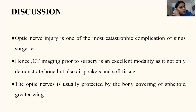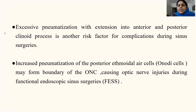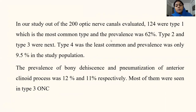Optic nerve injury is one of the most catastrophic complications of sinus surgeries. Hence CT imaging prior to surgery is an excellent modality, as it demonstrates not only the bone but also the air pockets and soft tissue. The optic nerve is usually protected by the bony covering of the sphenoid and ethmoid. Excessive pneumatization with extension into the anterior and posterior clinoid process is another risk factor for complications during sinus surgeries. Increased pneumatization of the posterior ethmoid cell forms the boundary of the optic nerve canal, causing optic nerve injuries during the procedure. In our study, out of 200 optic nerve canals evaluated, 124, that is nearly 62%, were type 1 and the least was type 4 at 9.5%. The prevalence of bony dehiscence and pneumatization of the anterior clinoid process was most common in type 3.